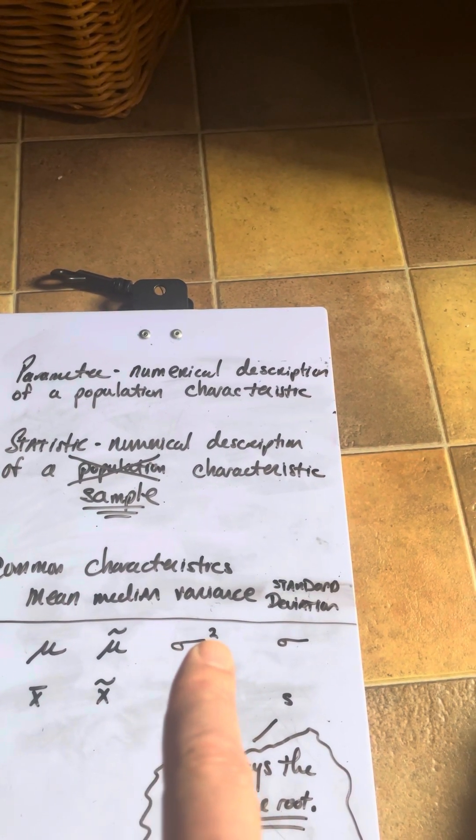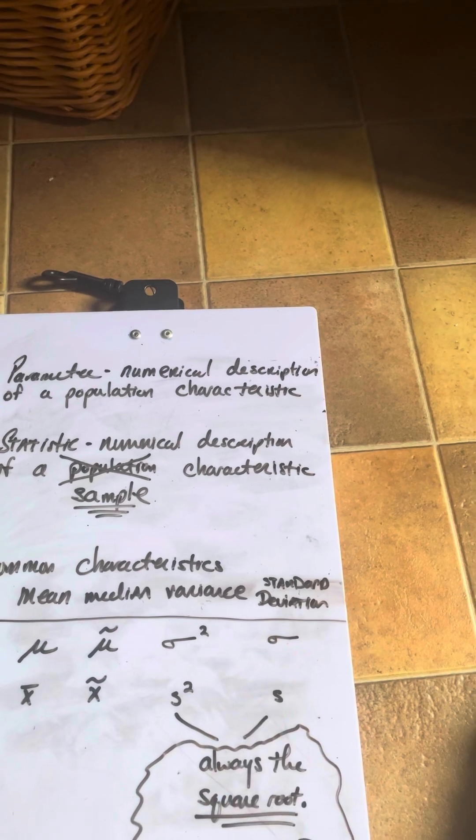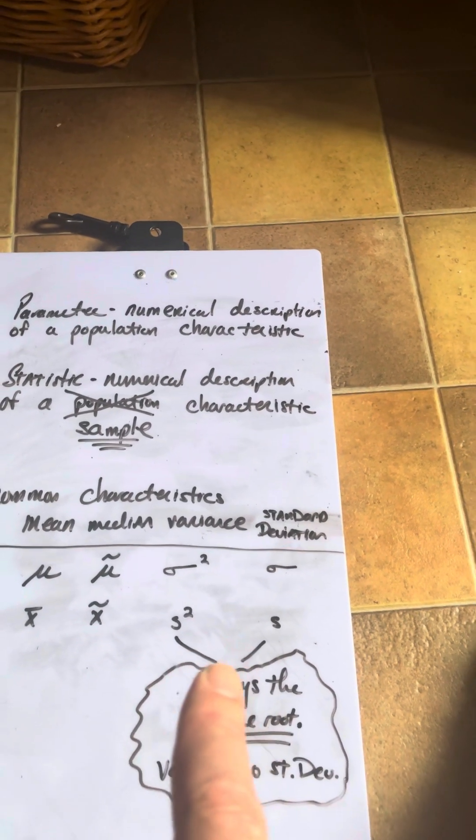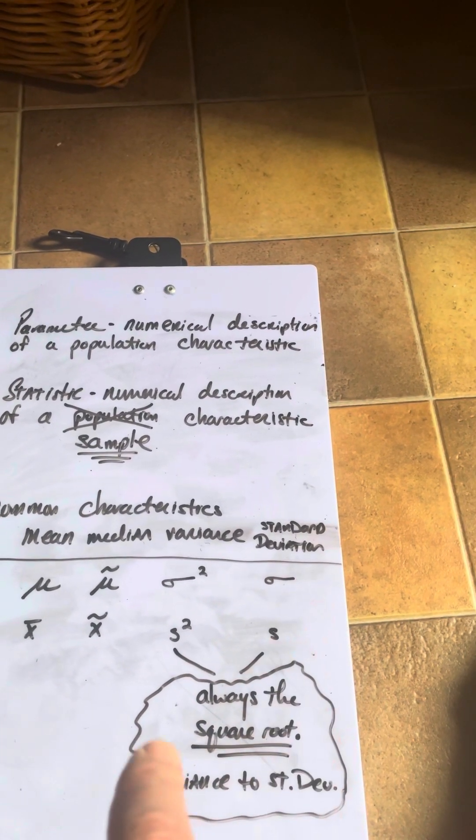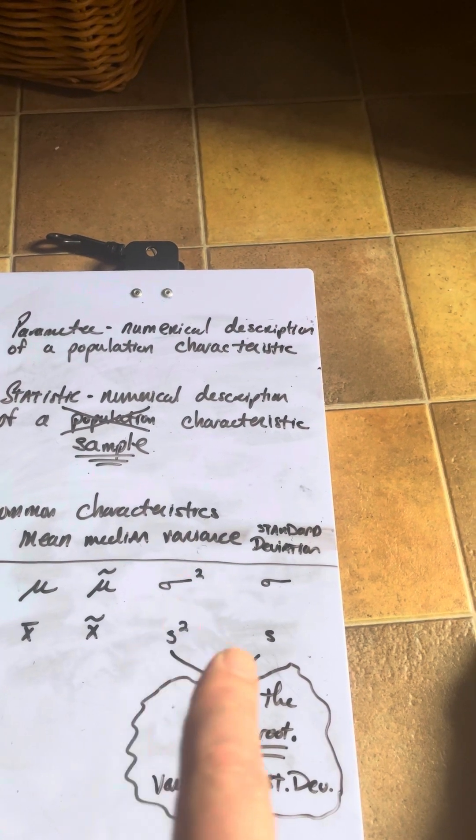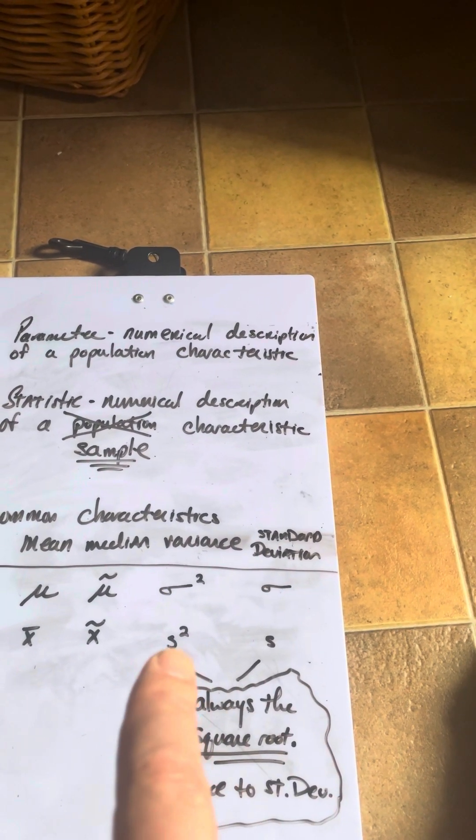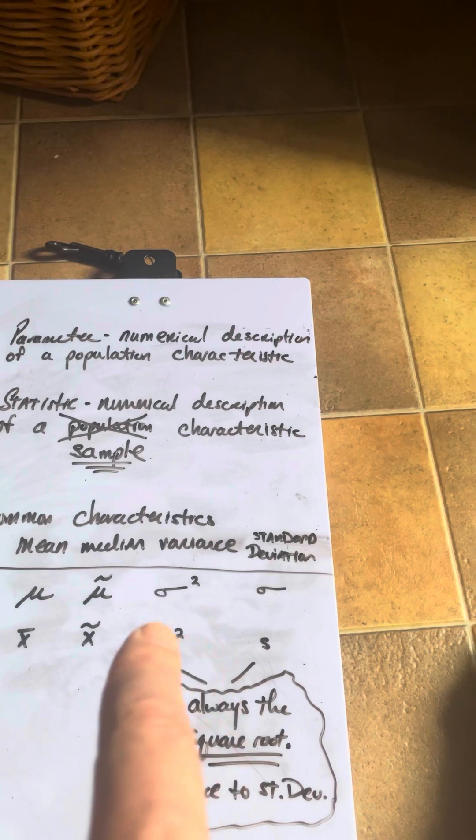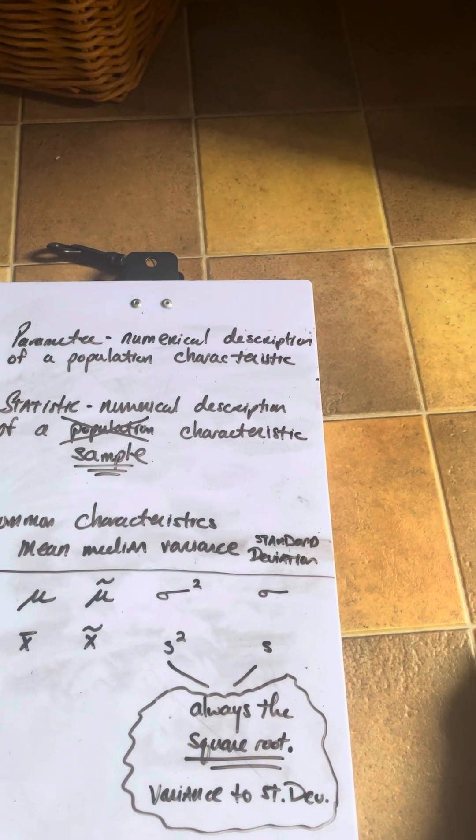And standard deviation is always the square root of the variance. So you'll see this sigma squared and then you'll have this sigma. And for sample variance and sample standard deviation, you're going to have s squared and s.